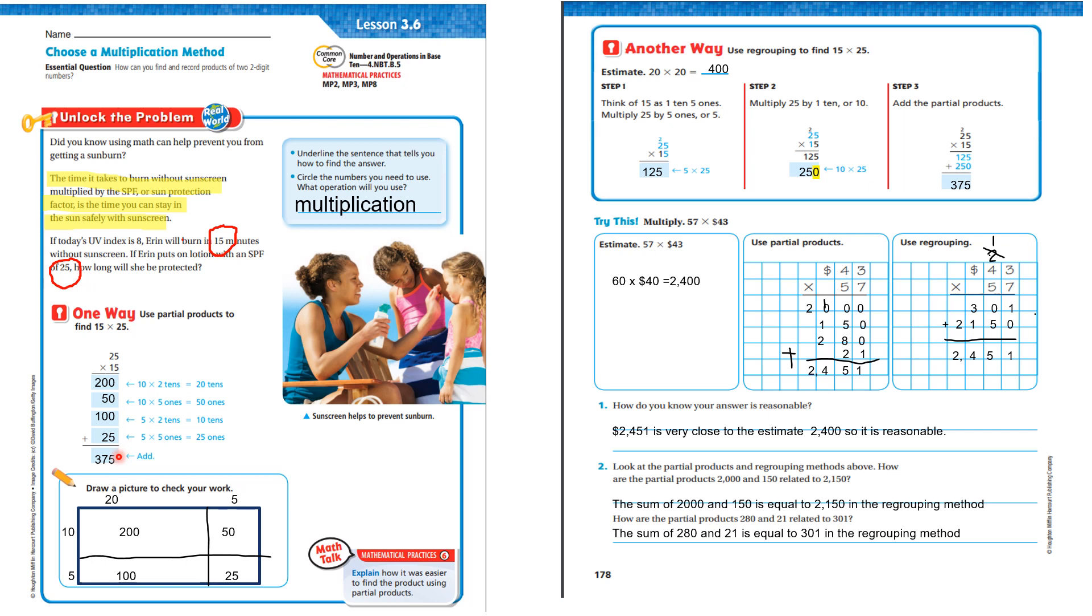Now, we can draw a picture. Remember how to draw the picture? We draw the rectangle. We break 25 down into 20 and 5, and 15 down to 10 and 5. 10 times 20 is 200. 10 times 5 is 50. 5 times 20 is 100. And 5 times 5 is 25.